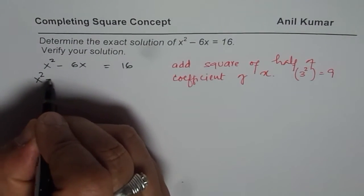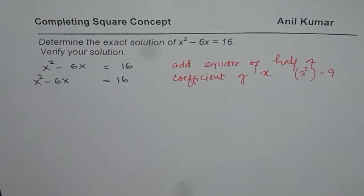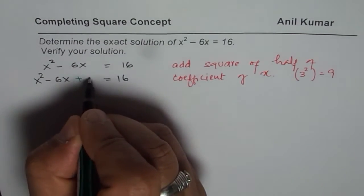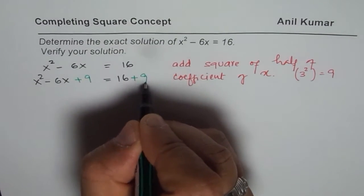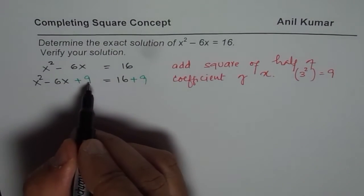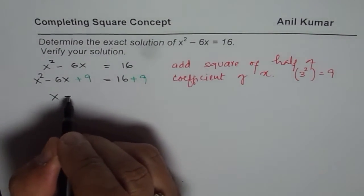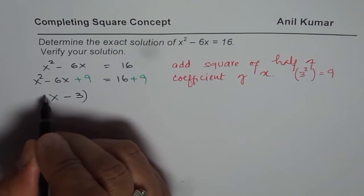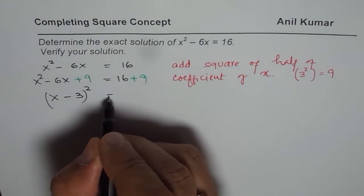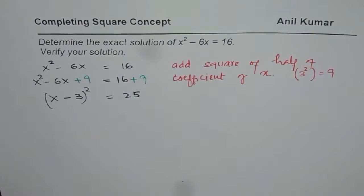So, we will do x squared minus 6x equals to 16 and here we are going to add 9 since 9 is 3 squared. Once you do that, then these three terms form a perfect square and they can be written as x minus 3 whole square. And here on the right side, we get 16 plus 9 is 25.